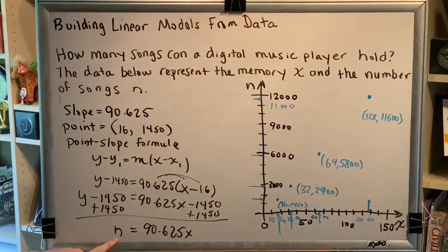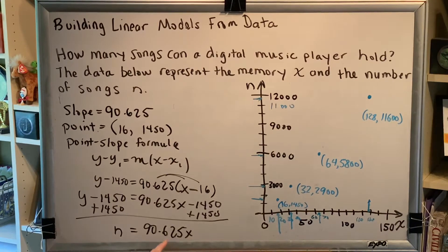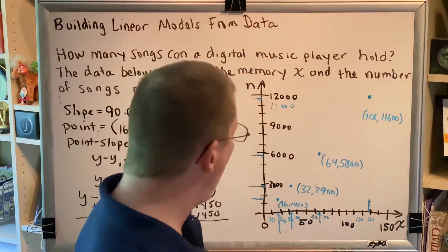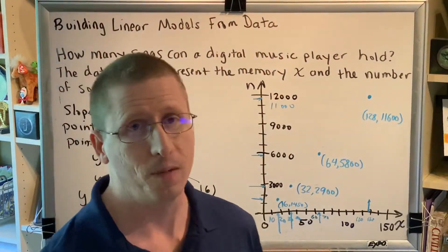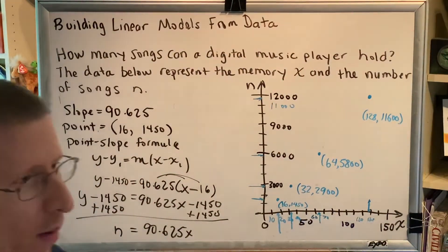Well, what this is saying is, if n represents the number of songs, and x represents the size of the music player measured in gigabytes, just take the gigabyte size, multiply it by 90.625, and that'll tell you how many songs that it can hold. So for example, if x is equal to 16, then you just have to do 16 times 90.625, and it will give you 1450. A 16 gigabyte music player can hold 1450 songs. So now I have an equation that allows me to predict the future. I'm no longer limited to just these four data points. I can pick any size music player and determine how many songs it will be able to hold.